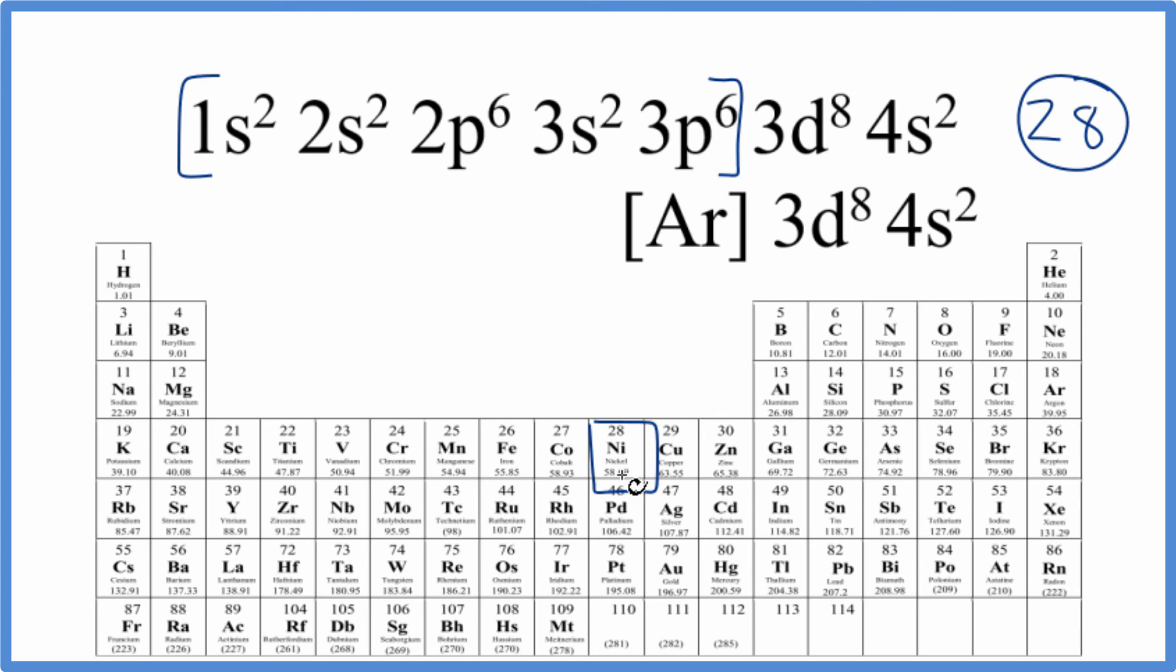This is Dr. B finding the element on the periodic table that represents the electron configuration 1s², 2s², 2p⁶, 3s², 3p⁶, 3d⁸, 4s². Thanks for watching.